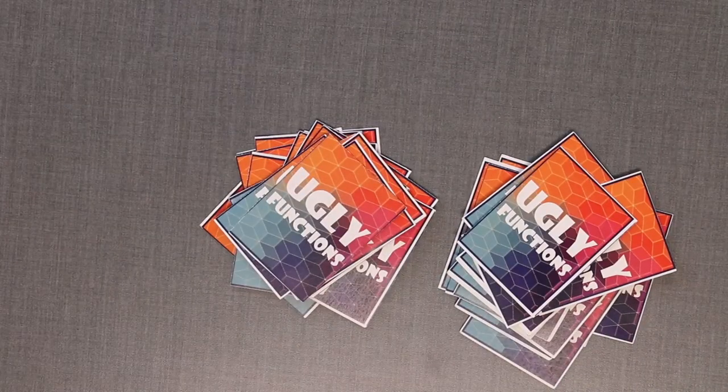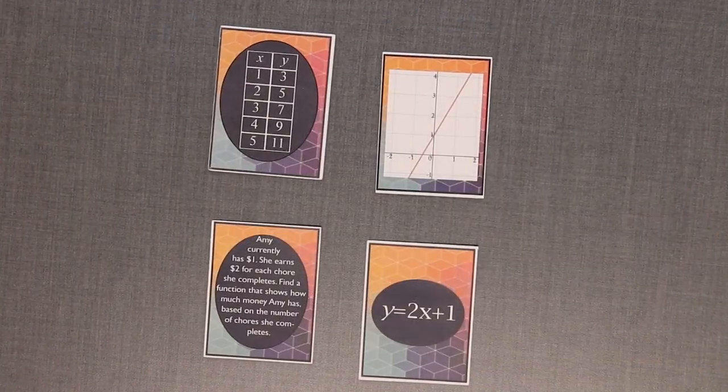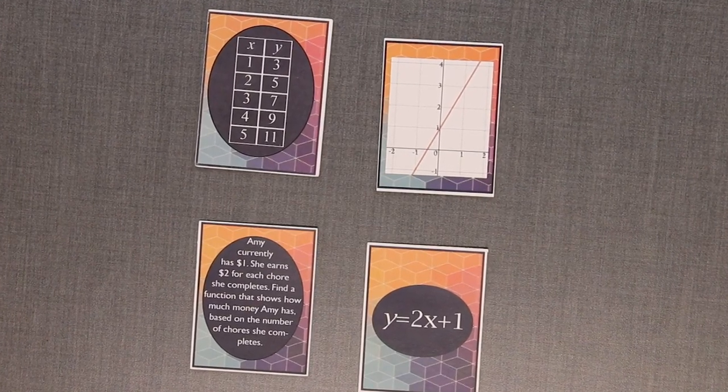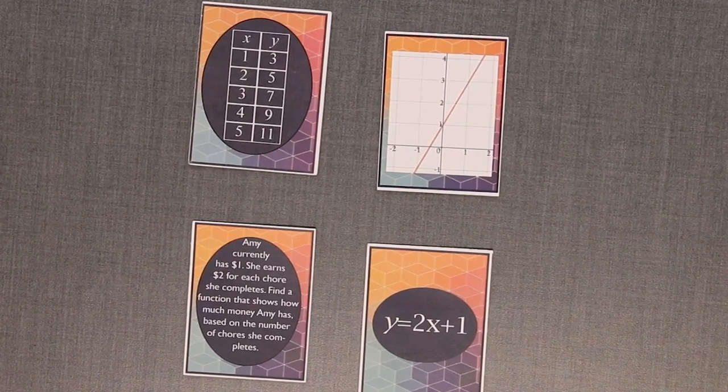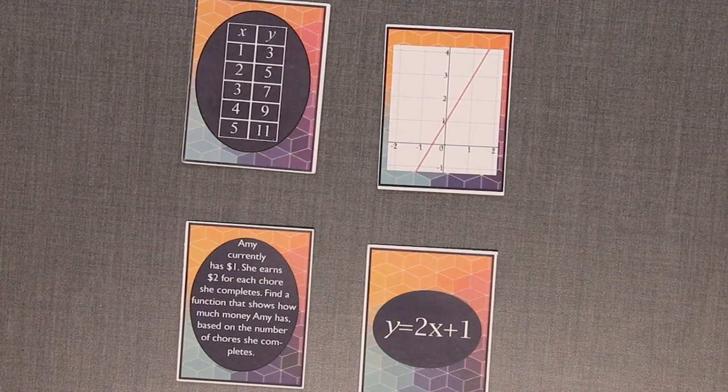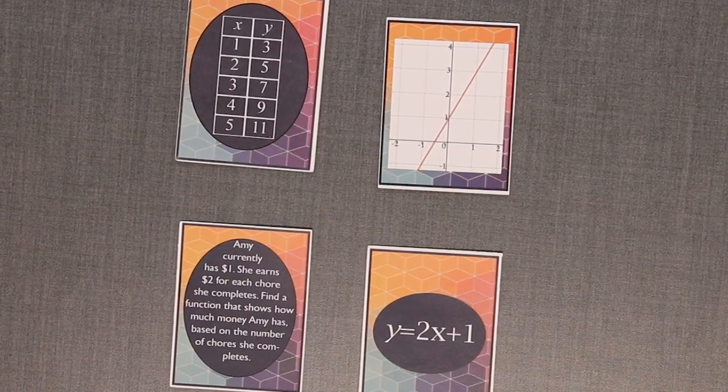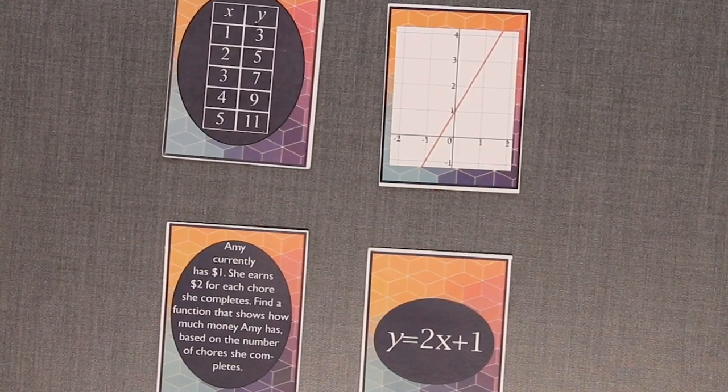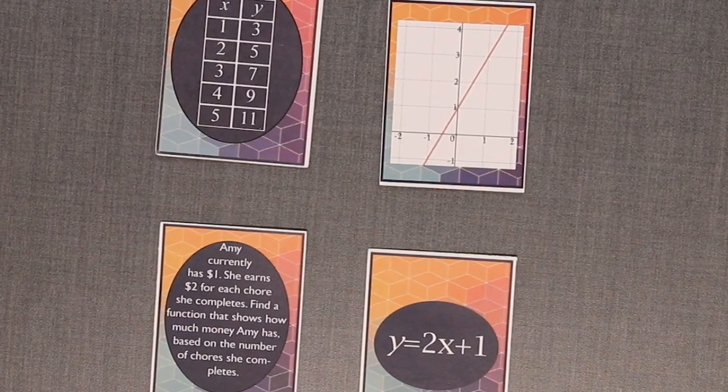Deal out the cards evenly to all the players. To familiarize yourself with the cards, complete the pregame activity as follows. For each linear function, work together to find the 4 corresponding cards that represent the function. Group them together and explain how you know they match. Each linear function has 4 cards. There are 12 groups of 4 cards each in the set.